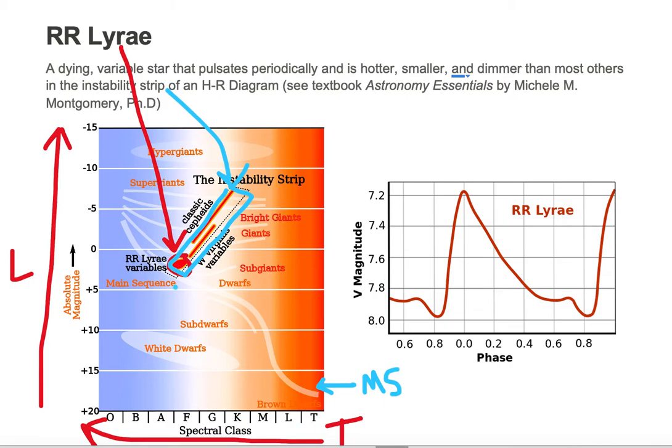Hotter is to the left, dimmer is down, lower or smaller radius is in the lower left corner. So these objects, these RR Lyras in the instability strip are hotter, smaller, and dimmer than most of the others in the instability strip.